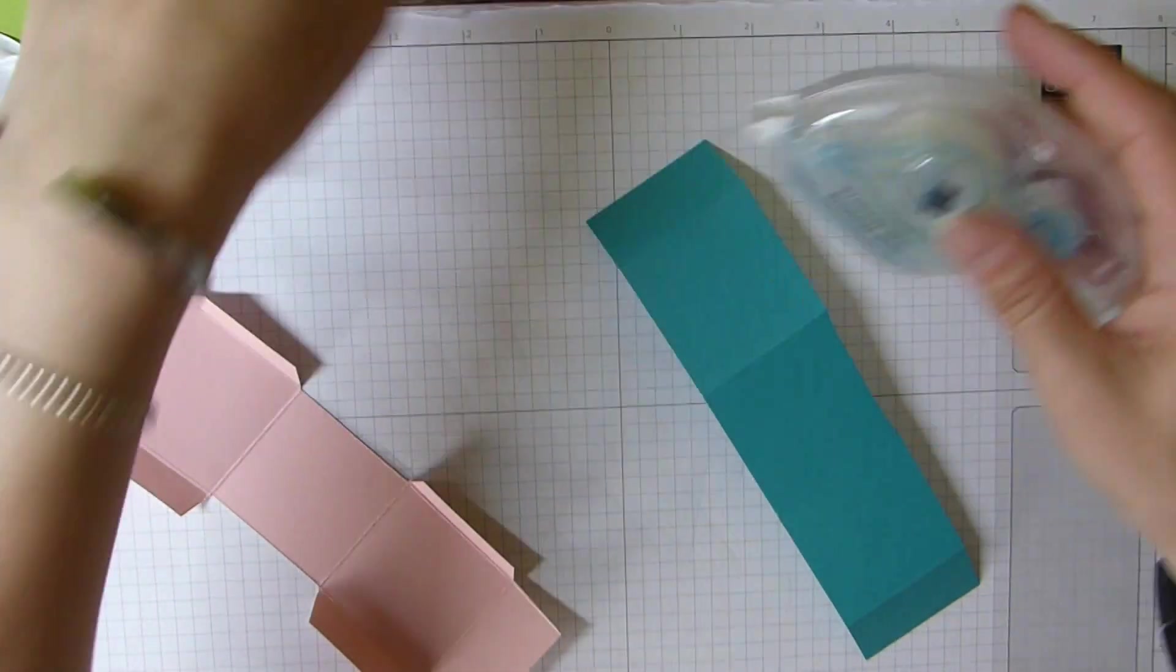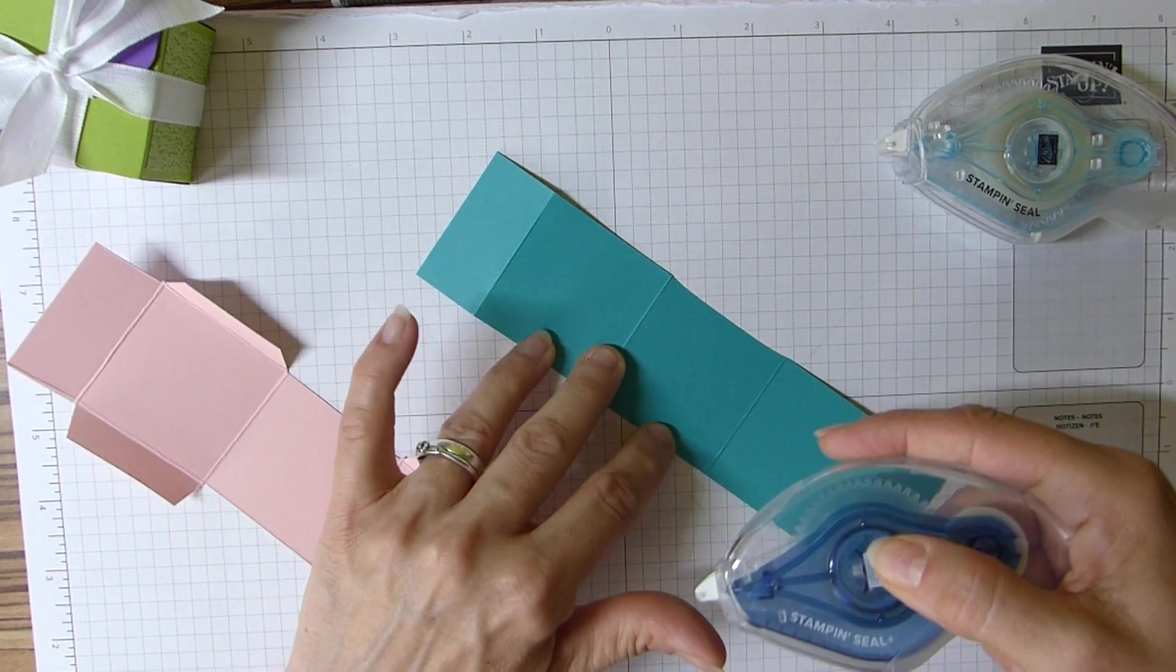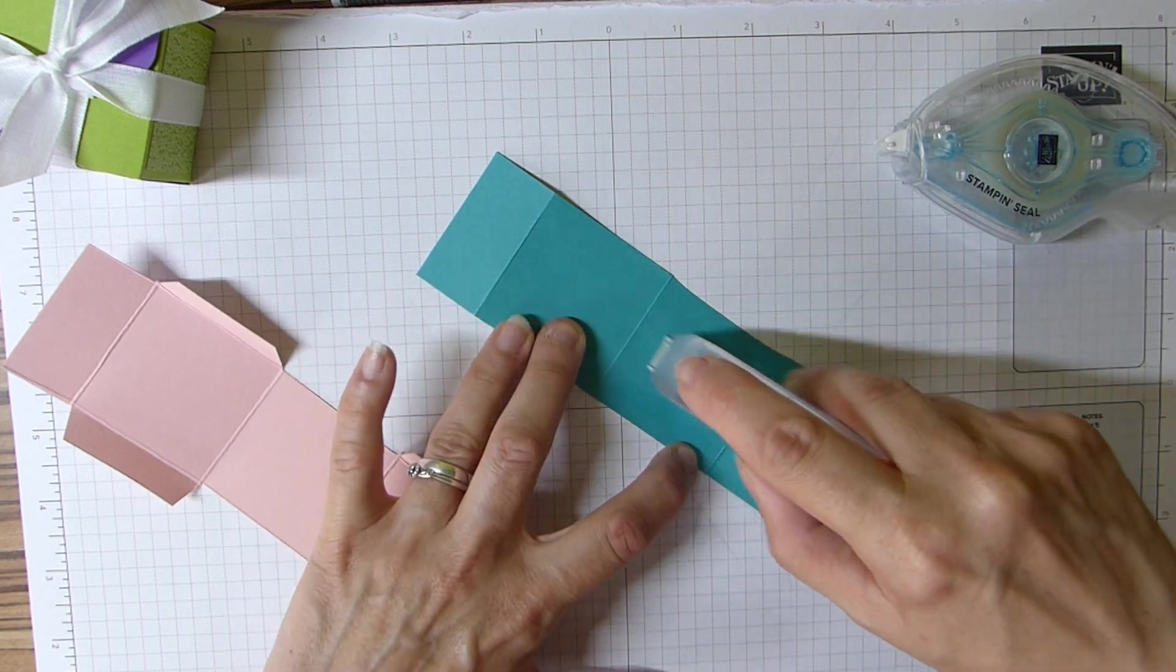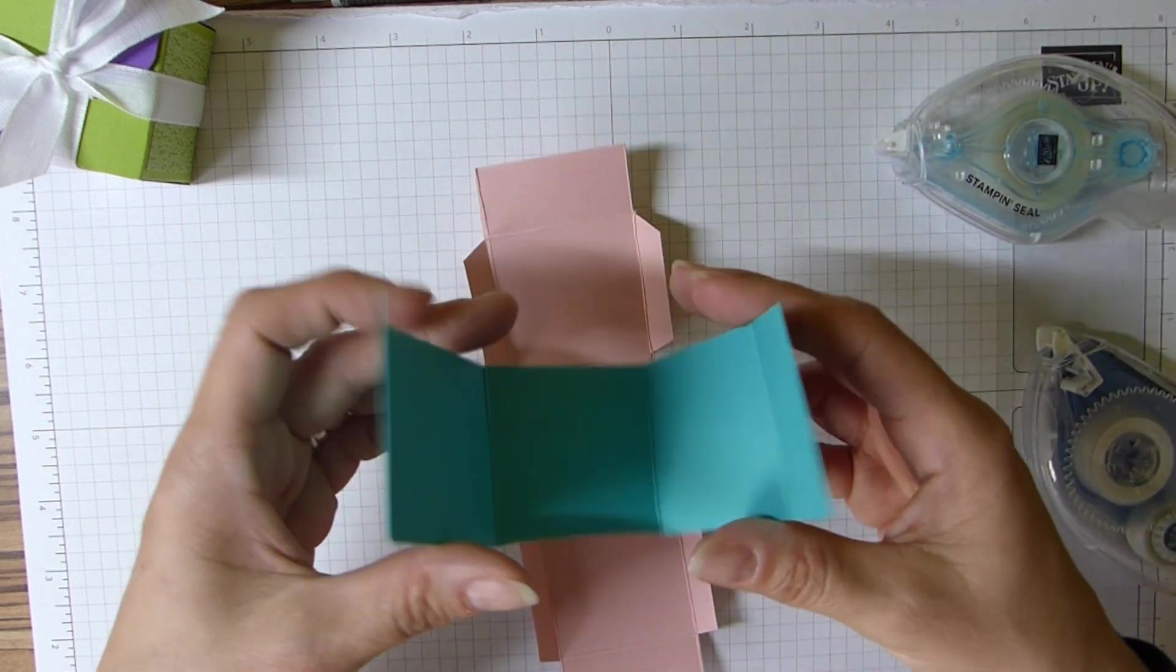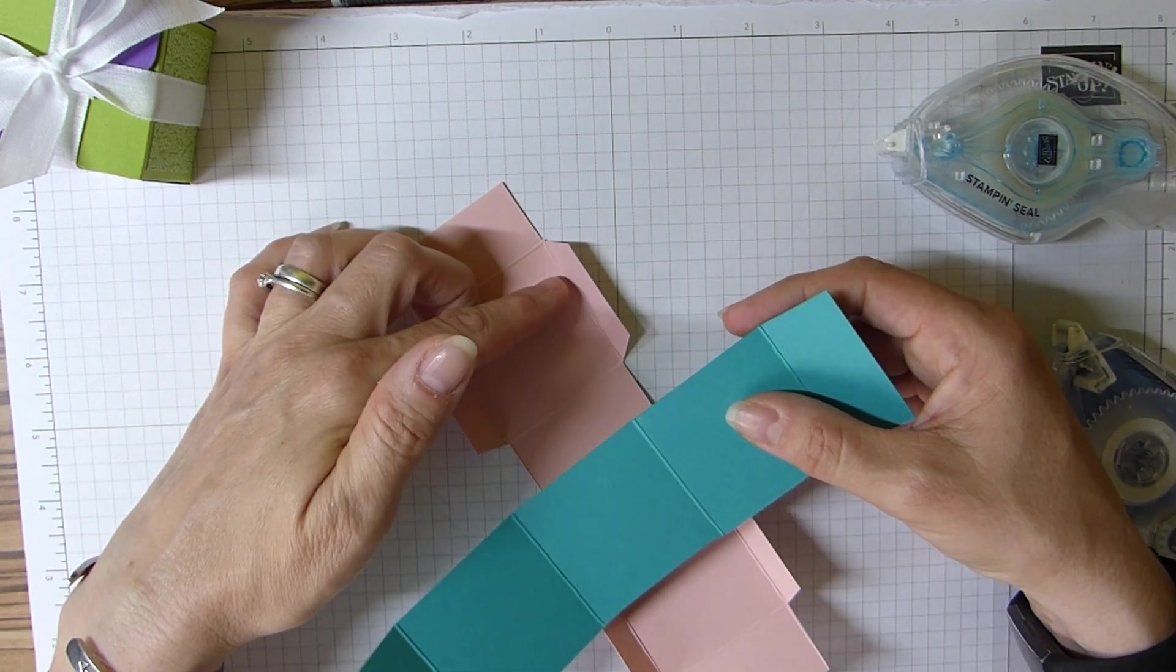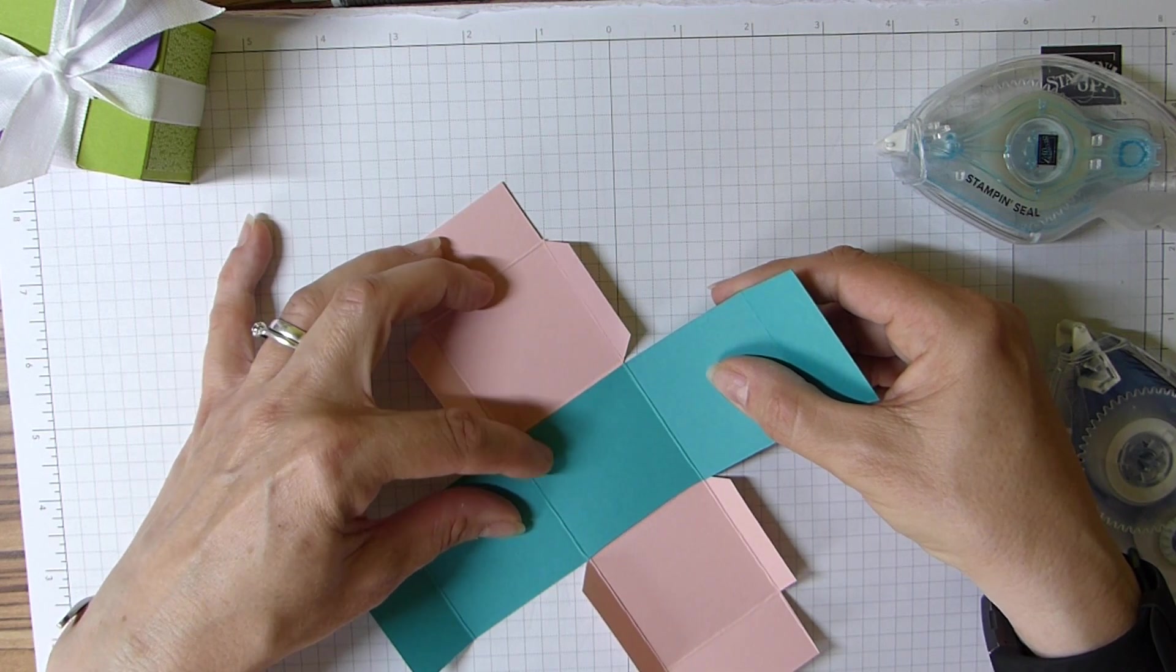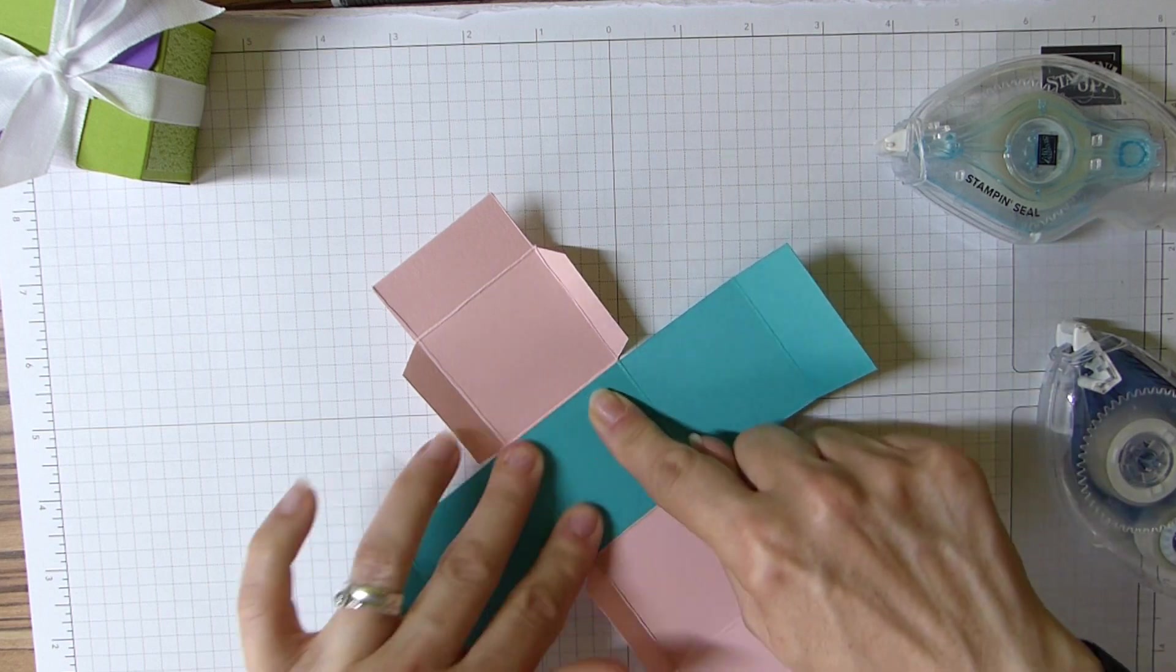Let's get some Seal Plus on the bottom of this one. I'm just going to line it up, so I'm lining my vertical score lines here with the score lines on my Blushing Bride, just like so, and I've lined that up with the horizontal score line too. Press that down.